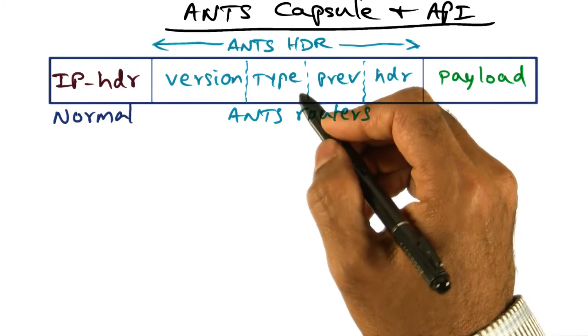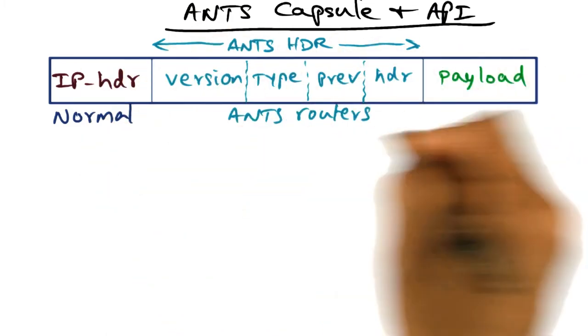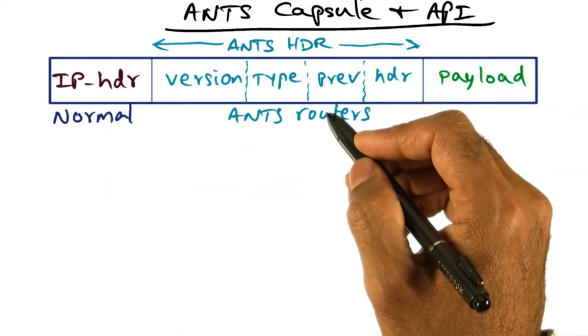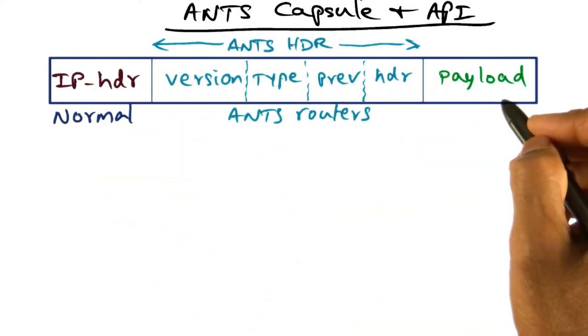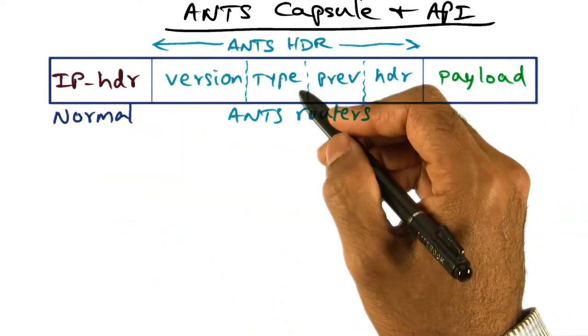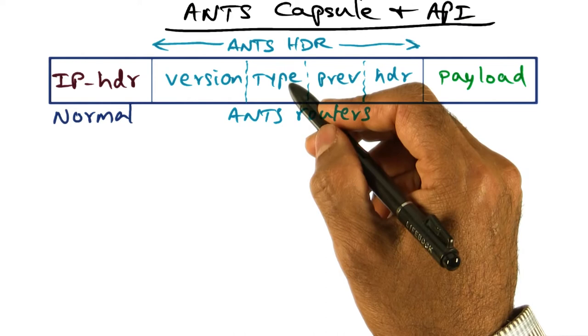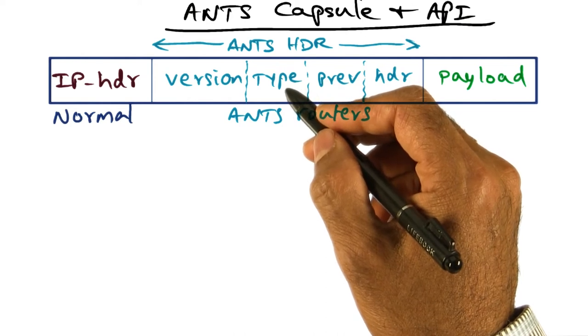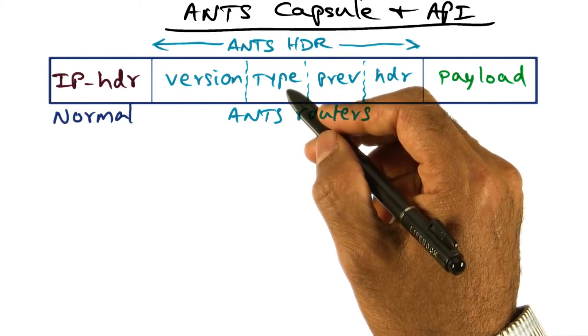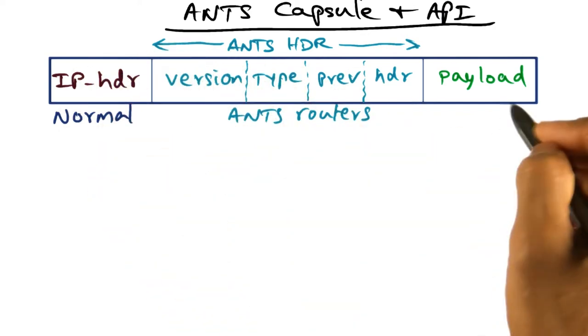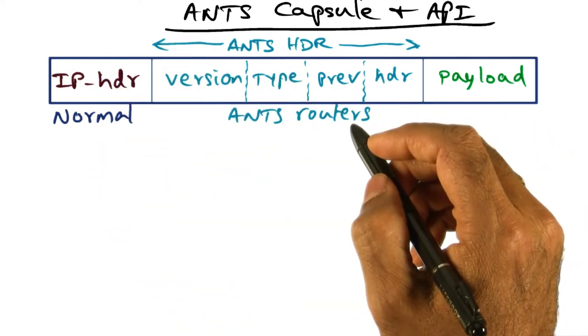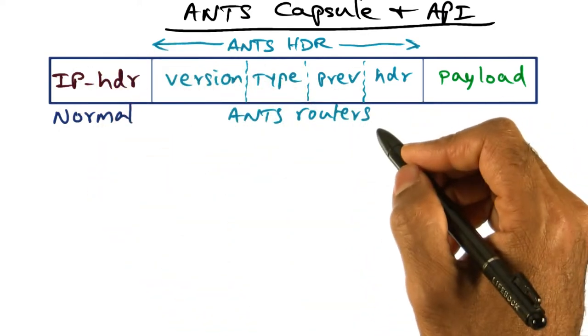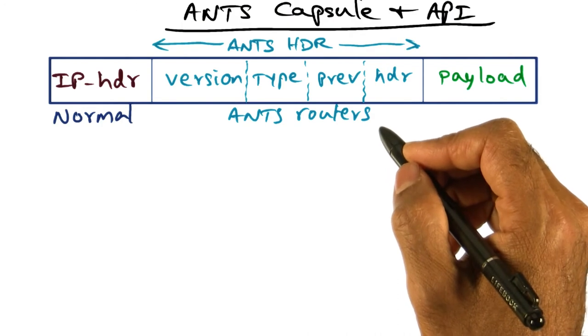The short hint that I'll give you is that the capsule itself, as you see, does not contain the code that needs to be executed to process this capsule, but it only contains a type field, and this type field is a vehicle by which we can identify the code that needs to be executed to process this capsule. More on that in a minute. First, let's talk about the API that ANTS toolkit provides you.